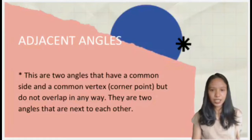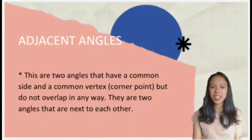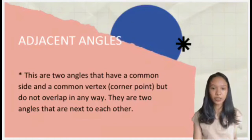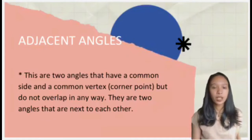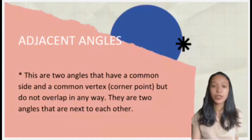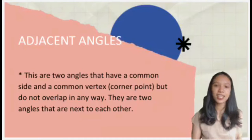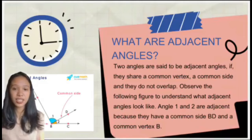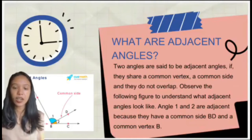What are adjacent angles? Adjacent angles are two angles that have a common side and a common vertex, or corner point. Adjacent angles do not overlap in any way — they are two angles that are next to each other. Two angles are said to be adjacent if they share a common vertex and a common side and they do not overlap.